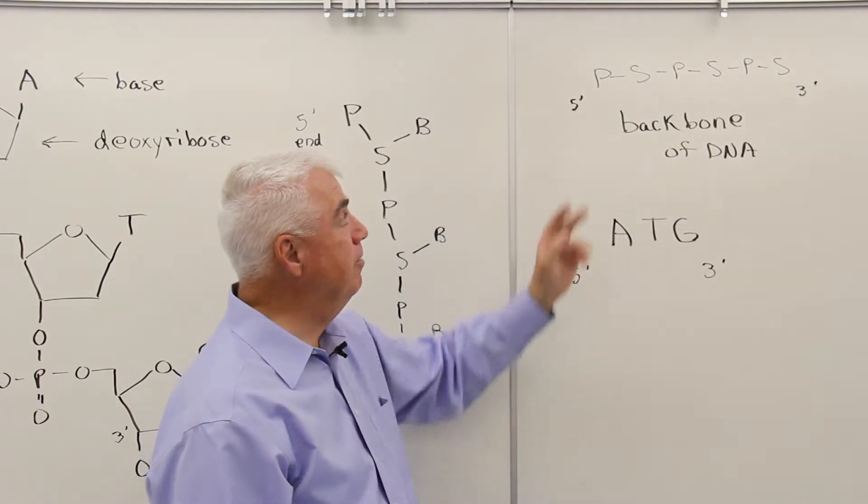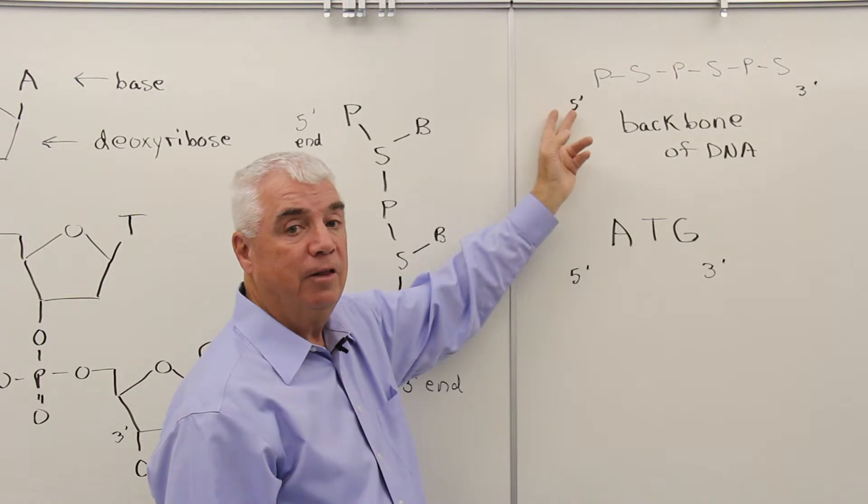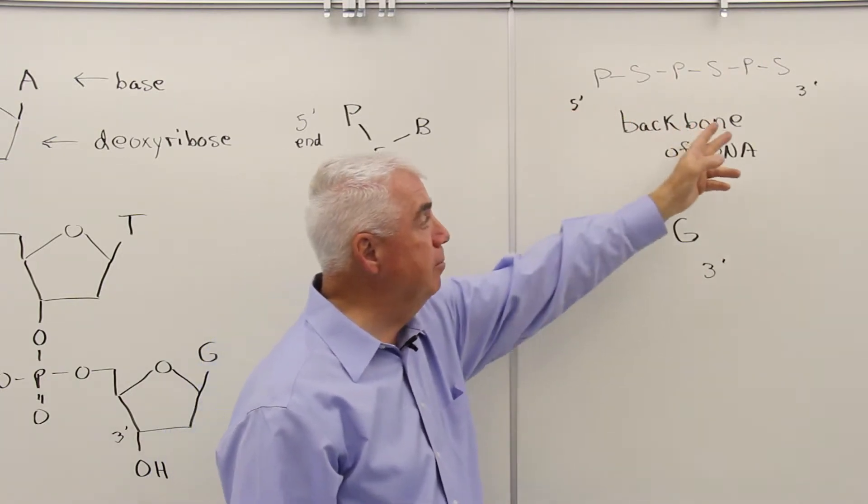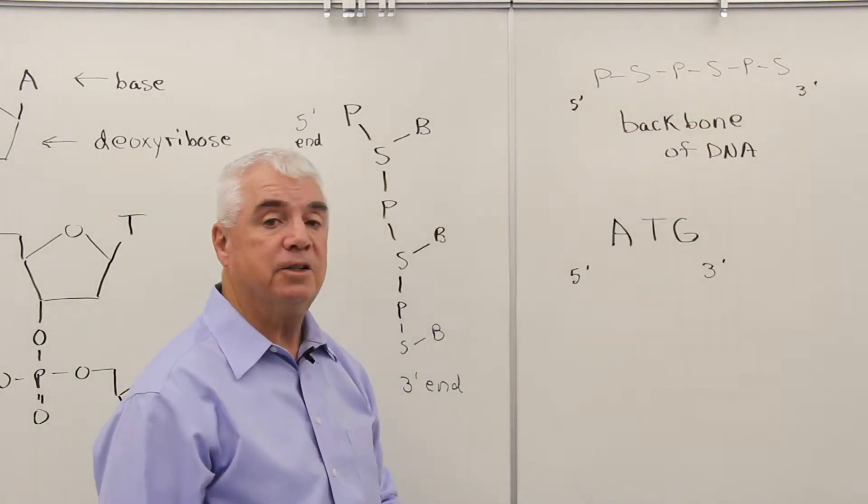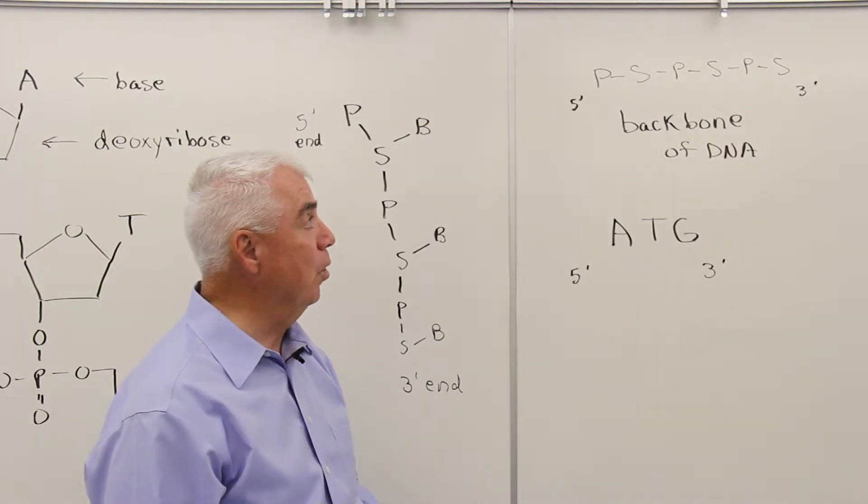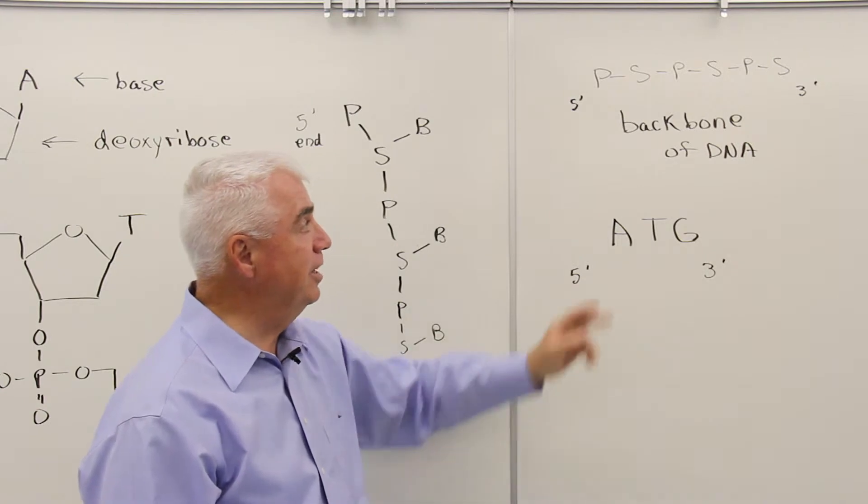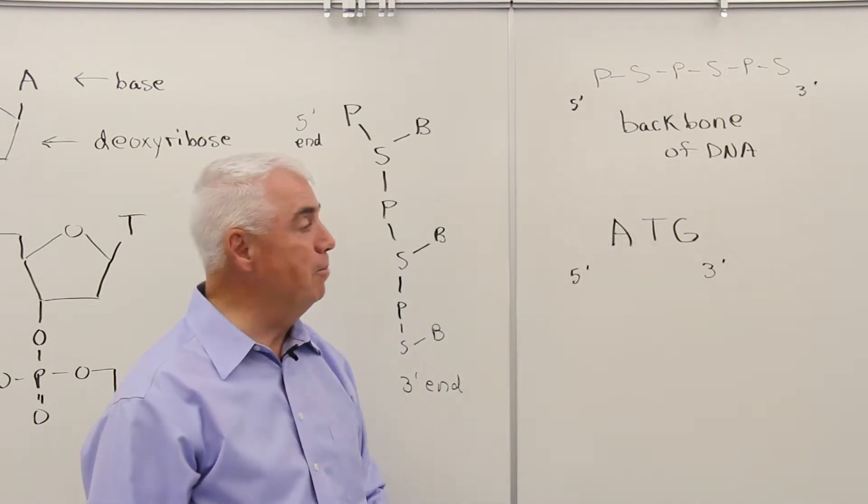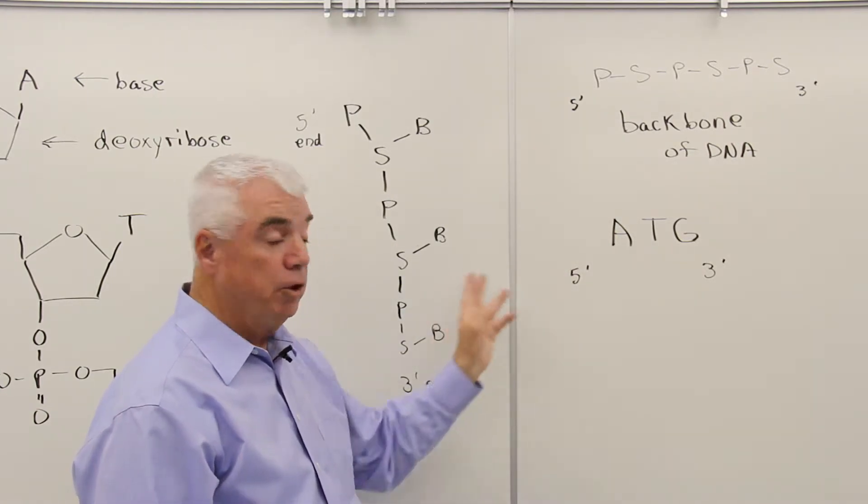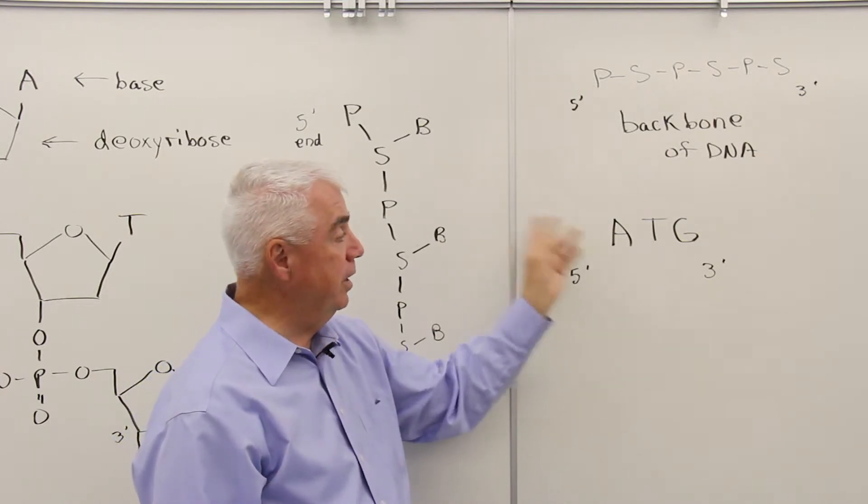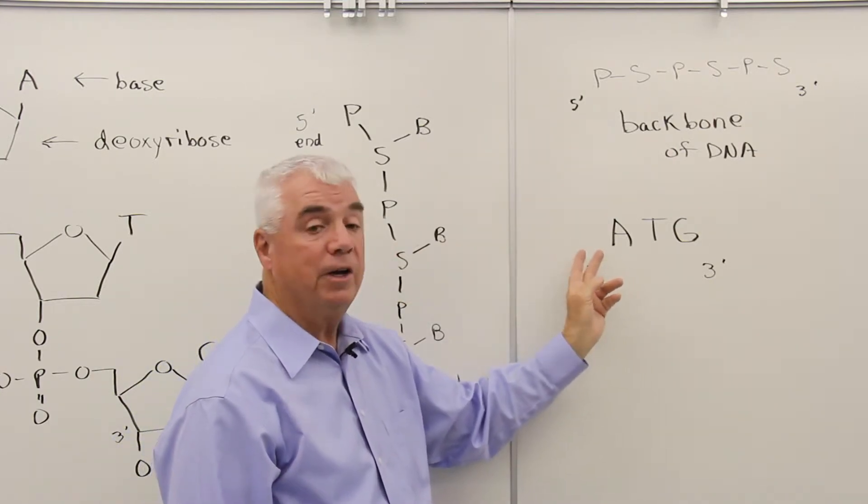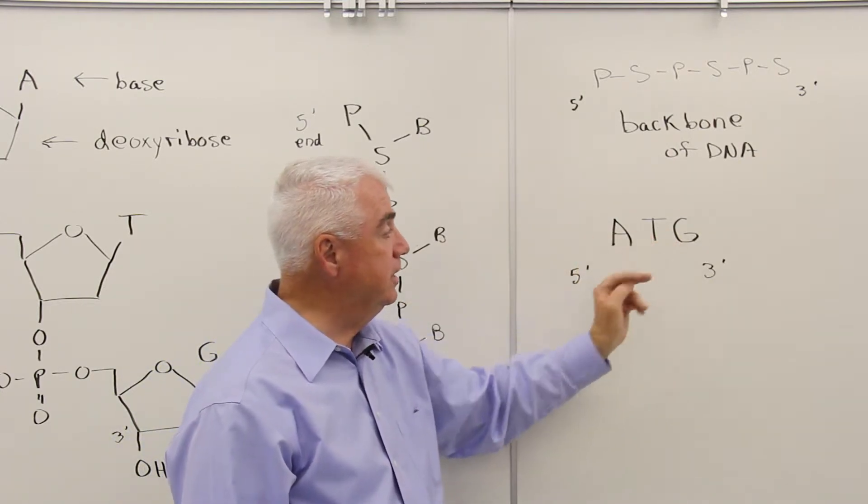Because DNA is a directional molecule, that is to say, the two ends are different, by convention, the one on the left is the five prime. The one on the end on the right is the three prime end of the molecule. This PSPS is called the backbone of the DNA molecule.